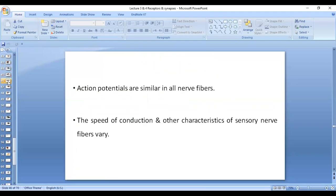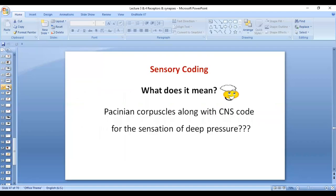One thing to remember is that action potentials are similar in all nerve fibers, and the speed of conduction of nerve fibers, of action potential, in the different nerve fibers vary, depending, of course, on that diameter and myelination of the nerve fibers. However, action potentials are all similar in all nerve fibers.